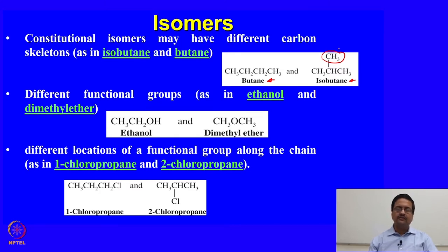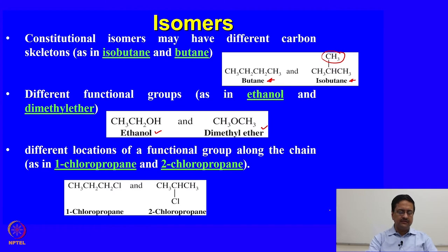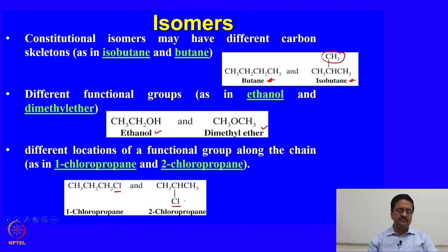A different functional group may also give rise to isomerism. For example, ethanol and dimethyl ether both have the same chemical formula C2H6O, but the atoms are bonded differently in these two molecules — those are two different isomers. A third type of constitutional isomer arises from different locations of a functional group, for example 1-chloropropane and 2-chloropropane, where the position of the chlorine atom differs.